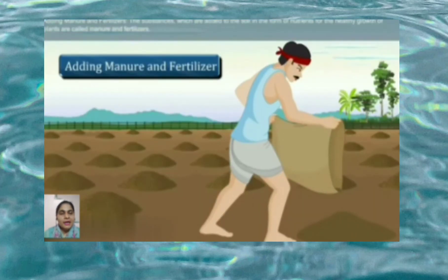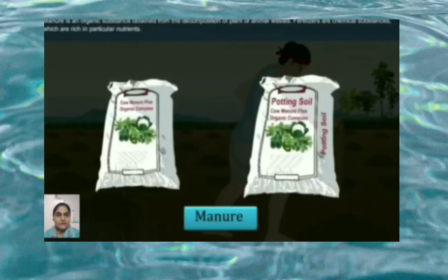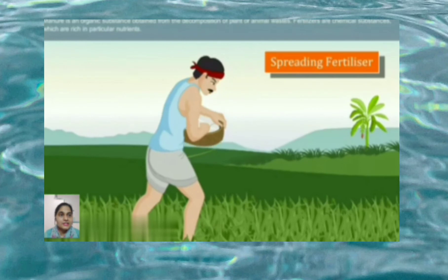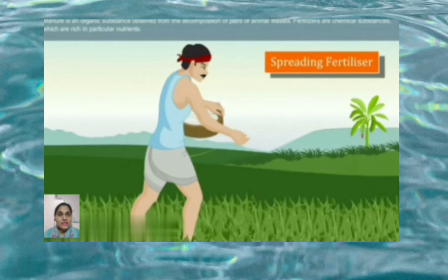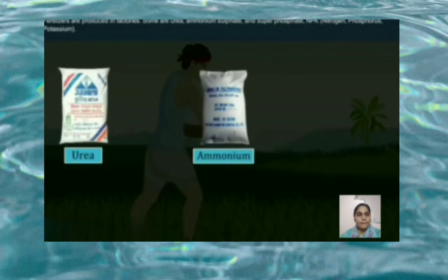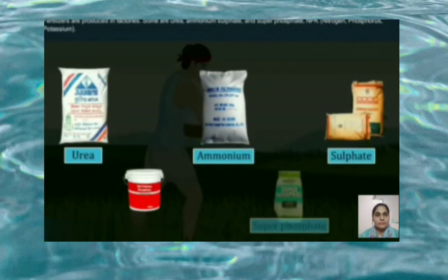The substances which are added to the soil in the form of nutrients for the healthy growth of plants are called manure and fertilizers. Manure is an organic substance obtained from the decomposition of plants and animal waste. Fertilizers are chemical substances which are rich in particular nutrients. Fertilizers are produced in factories — some examples are urea, ammonium sulfate, and superphosphate.